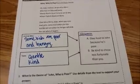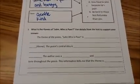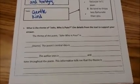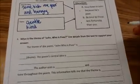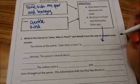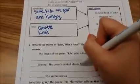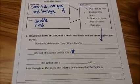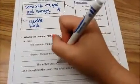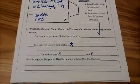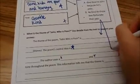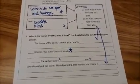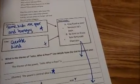Now that you've chosen a theme — either A or B — we're going to transfer that information into the paragraph. It says: 'What is the theme of John Who Is Poor? Use details from the text to support your answer.' The frame reads: 'The theme of the poem John Who Is Poor is blank' — this is where you write your chosen theme. 'The poem's central idea is blank' — this is where you write the central idea. 'The author uses a blank and blank tone.' This information then tells me that the theme is blank. Go ahead and complete your paragraph, then resume the video.